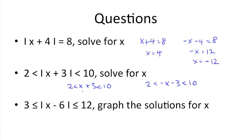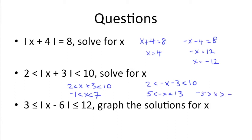Now just solve for x. Over here, we need to subtract 3 from both sides, so we get negative 1 is less than x is less than 7. And over here, we need to add 3 to both sides. Then, because we need to divide by negative 1 on both sides, we need to flip the signs, so we get negative 5 is greater than x, which is greater than negative 13.